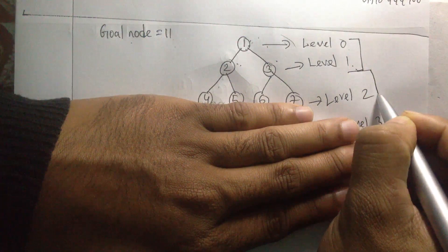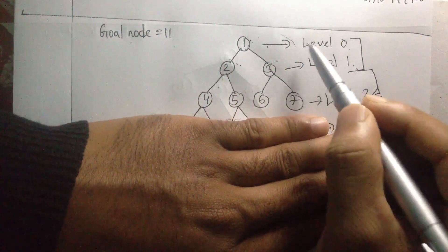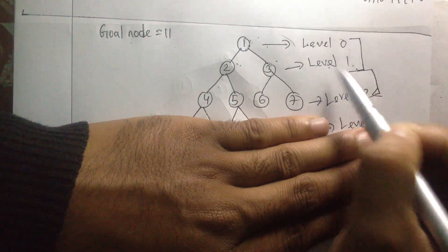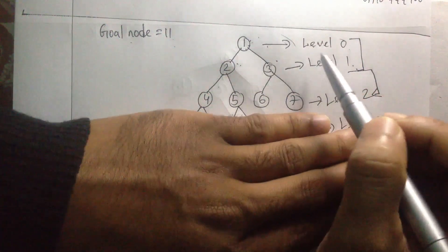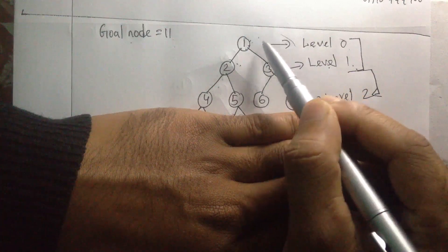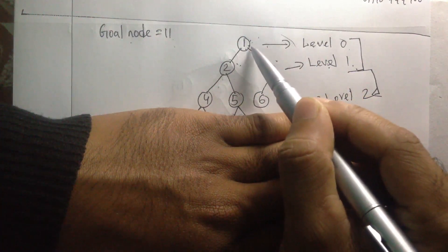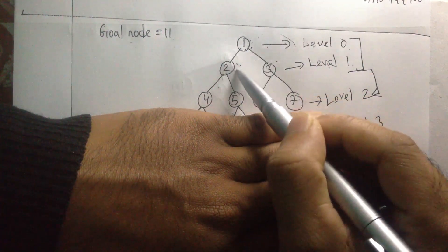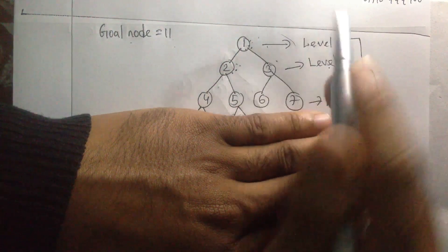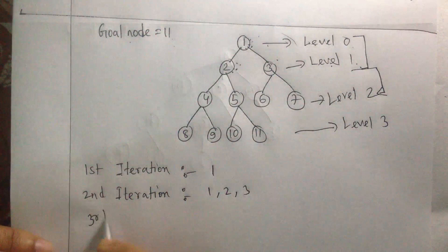Now we go to the next level and have three levels: level 0, level 1, and level 2. Again we use DFS with a pre-order strategy — root, left, right. In the third iteration I start with the root node.